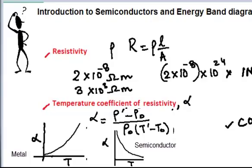This means that at higher temperatures, semiconductors conduct electricity more easily compared to lower temperatures. So the number of charge carriers seems to increase when temperature is high in a semiconductor. But in the case of a metal, at higher temperatures the resistivity is more, because the disorder within the metal increases and the number of collisions becomes more frequent — so resistivity increases with the rise in temperature.